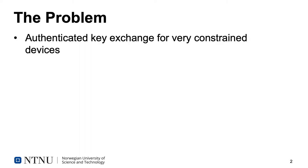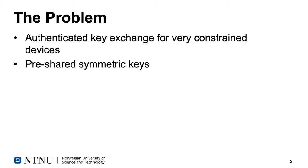In this paper, we are looking at authenticated key exchange for very constrained devices, but we still want to achieve desirable security properties. For this purpose, we want to look at only symmetric key primitives, as they in general require less resources than public key primitives. Another benefit of protocols relying purely on symmetric key techniques, such as hash functions and symmetric encryption, is that they can also achieve post-quantum security. So we want to achieve symmetric authenticated key exchange from pre-shared keys, and we want to keep desirable security properties such as forward security and concurrent correctness.